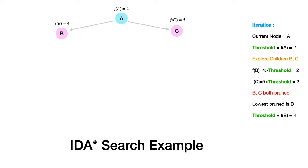With threshold = 2, both children B and C have F(n) values 4 and 5, which are greater than the threshold. So we don't pursue any of their children. This completes the first iteration.